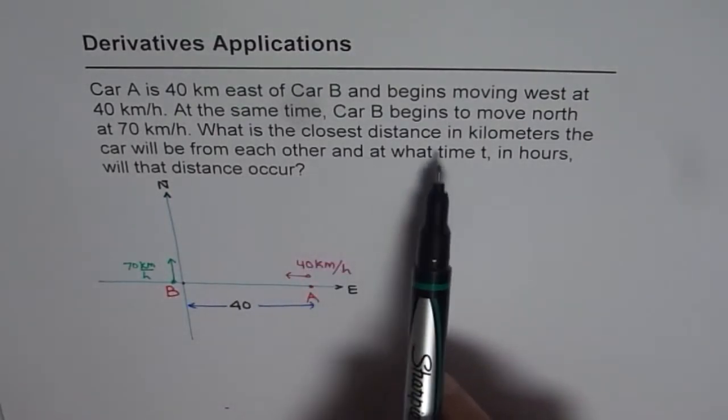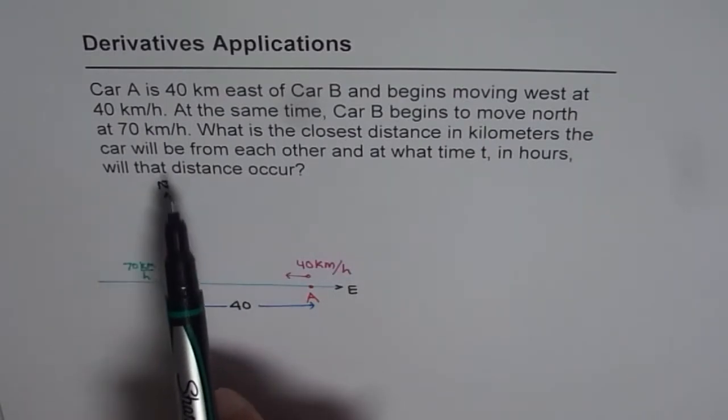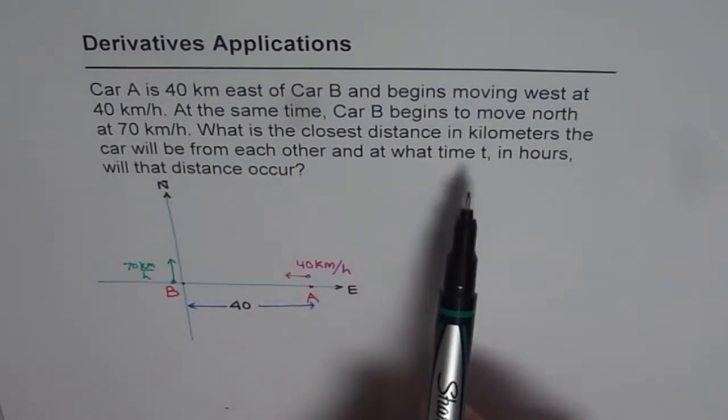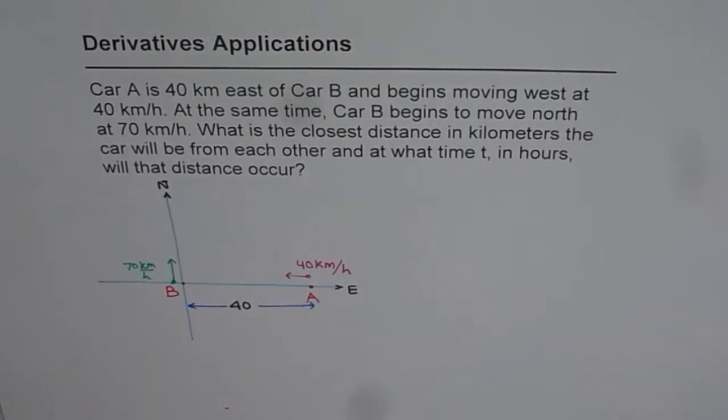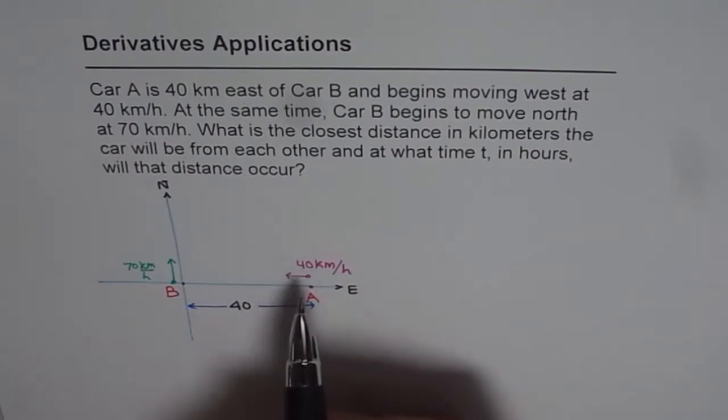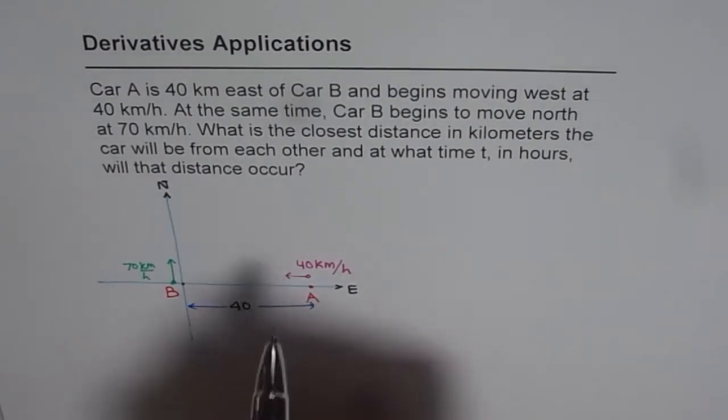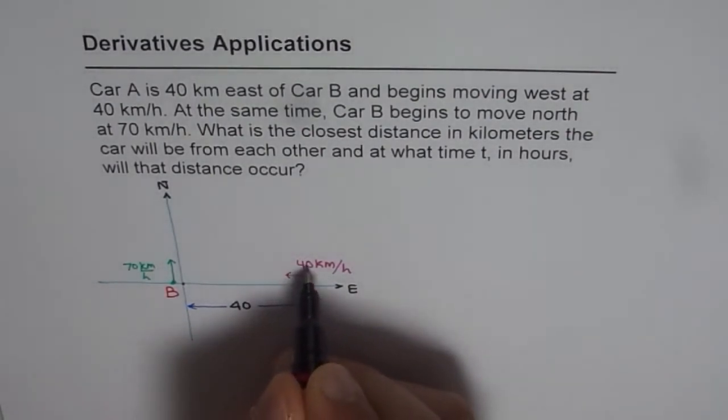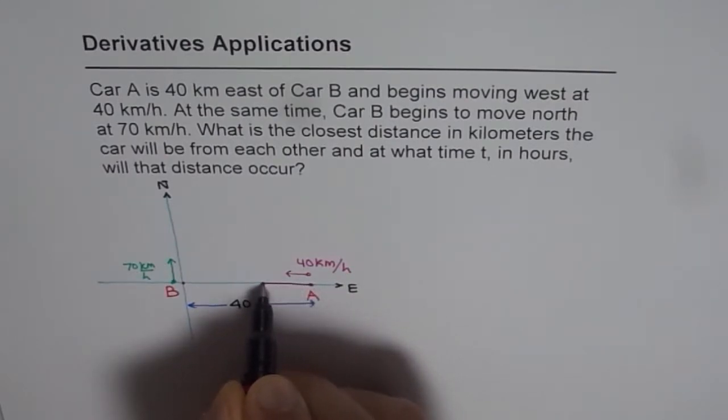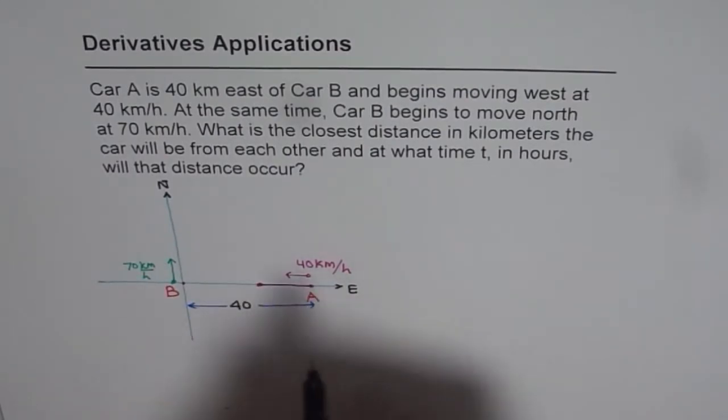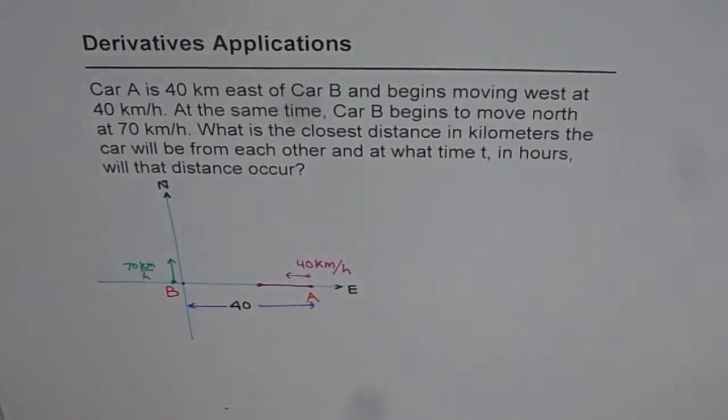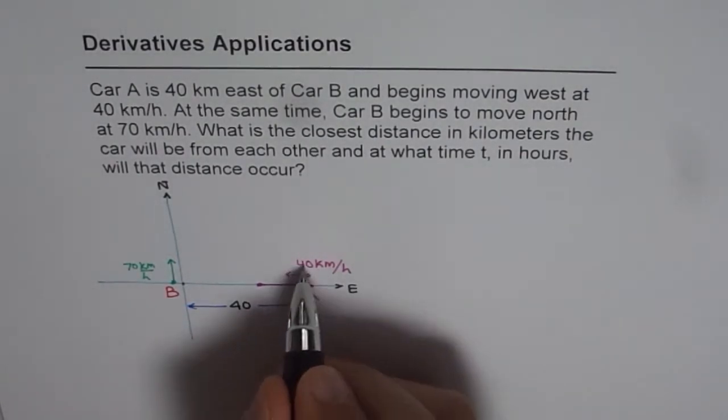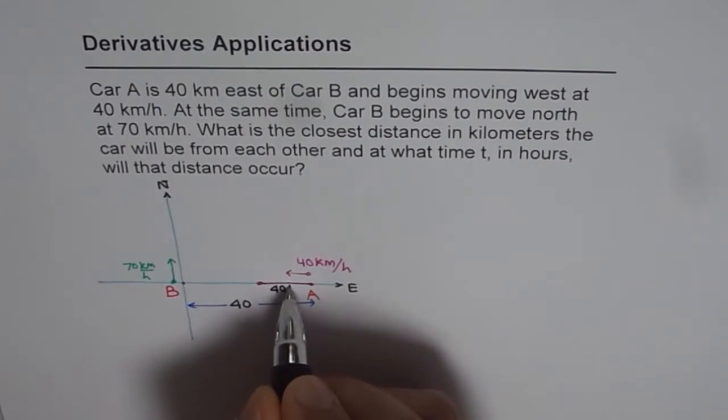So let us assume that the cars will be closest at time T. Now if they are closest at time T, how much distance will car A travel? So car A, let us say it travels from here, it can travel 40T distance. So the distance traveled by car A will be, let us say this point. So how much is this distance? Since time is T, distance will be 40 times T. So it is 40T.